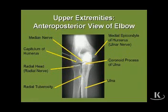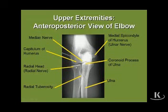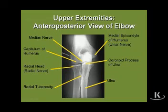The radial nerve, after crossing the elbow joint, sits right up against the head of the radius. So injury to the radial head — radial head fractures, or more commonly radial head dislocations — can cause damage to the radial nerve.